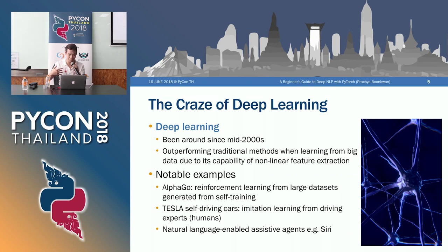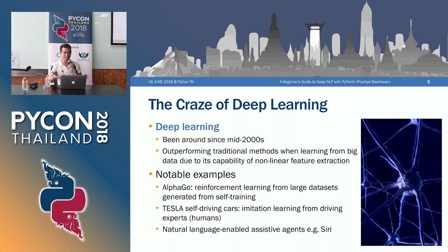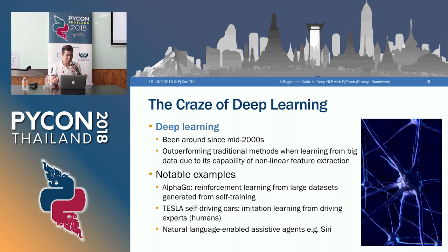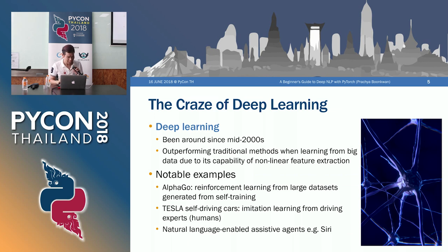There are some notable examples, like AlphaGo — the deep learning system that outperforms world champion Go players. Tesla is a self-driving car that uses imitation learning, a kind of reinforcement learning, training from expert drivers. And for natural language processing, there's Siri, which is also based on deep learning, like speech processing and stuff like that.